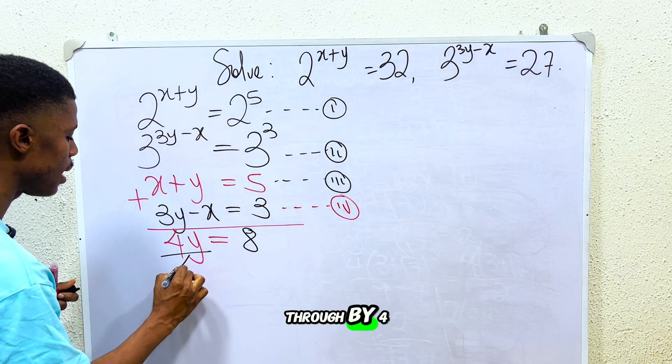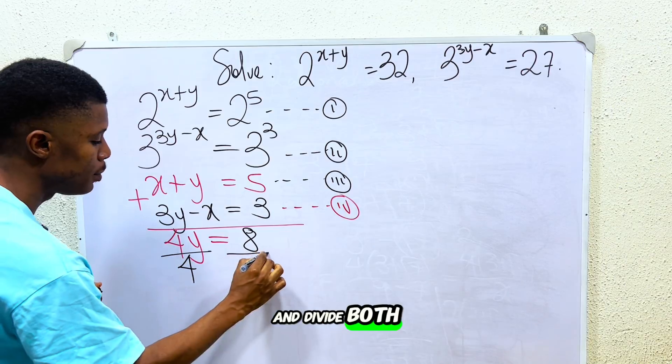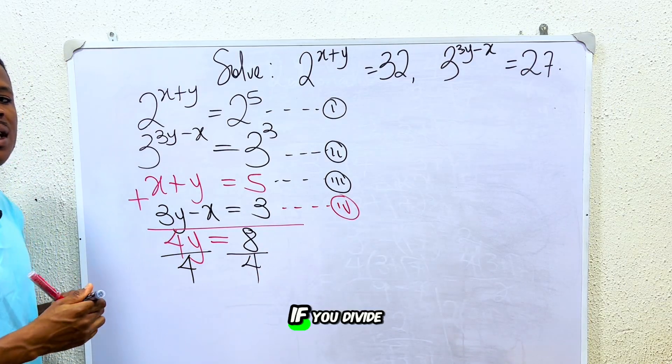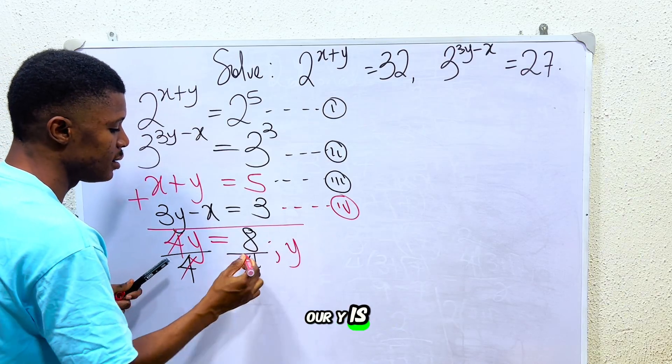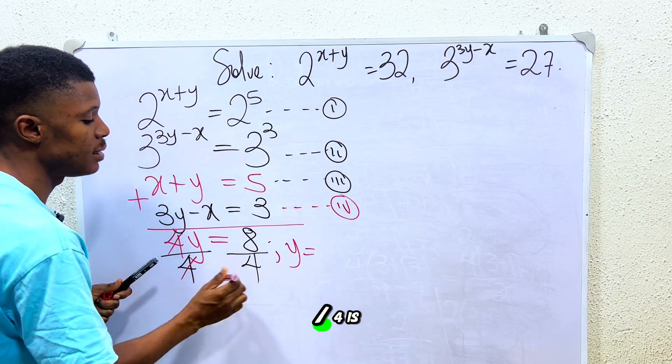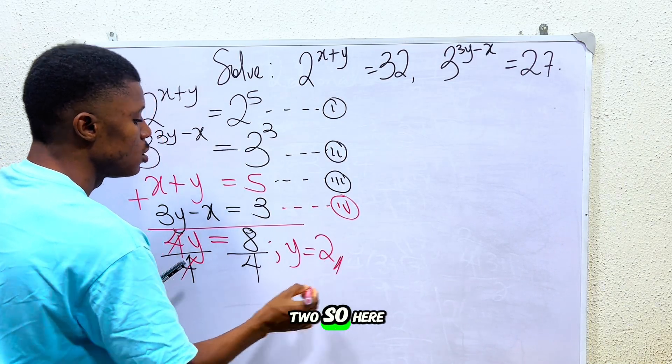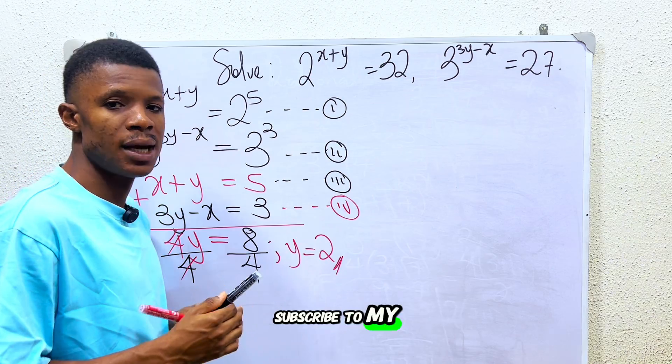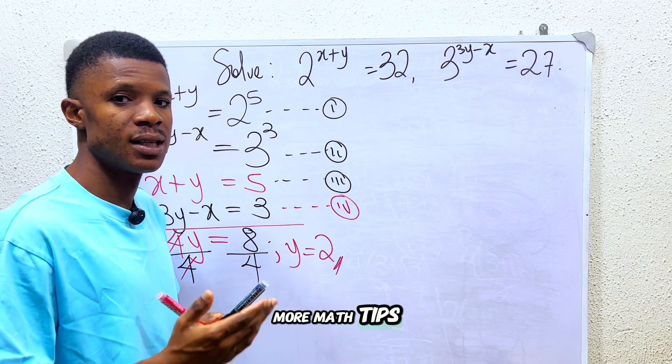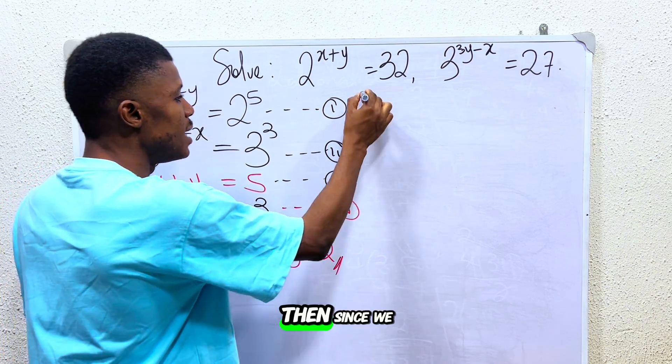For us to get the value of y, we simply divide through by 4. Divide both sides by 4. If you divide both sides by 4, 4 cancels out. You see that our y is equal to 8 divided by 4, which is 2. So here, y is actually 2. Do well to subscribe to my YouTube channel for more math tips like this.